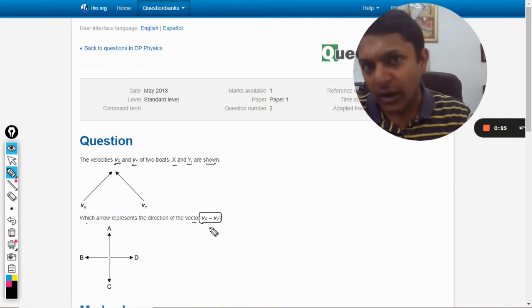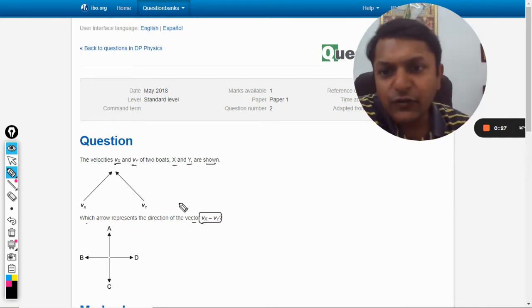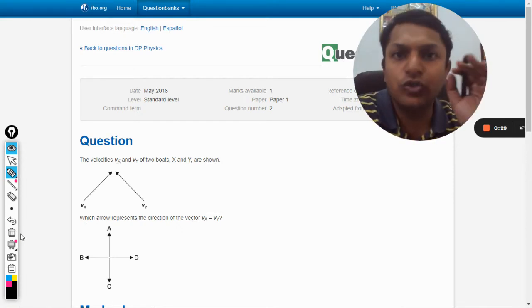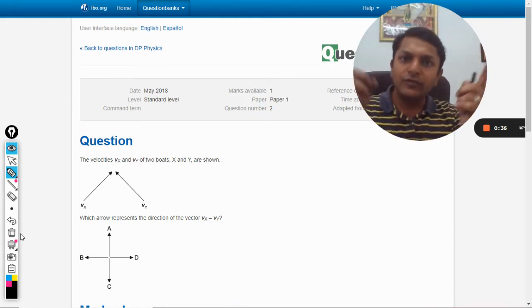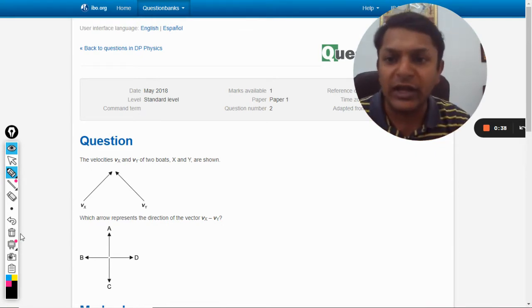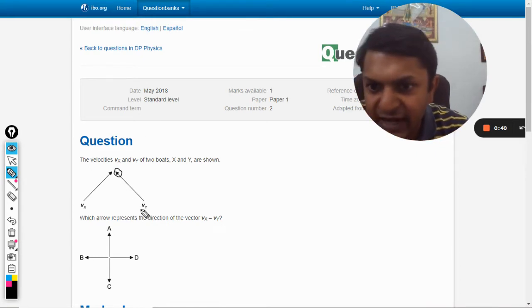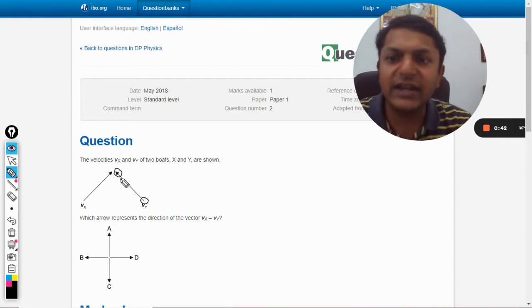In this kind of question, what are we supposed to do? First of all, we need to redraw the diagram. We will redraw them in such a way that both of the vectors are connecting tail to tail. See, this is head and this is tail, so they are connected head to head. We want to connect them from tail to tail.